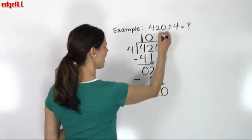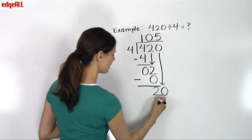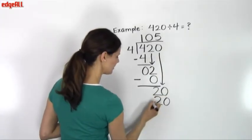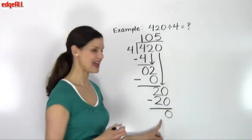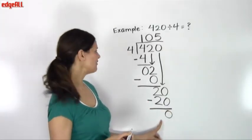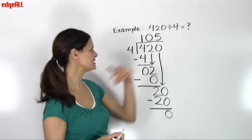If I multiply 5 times 4, I get 20 and put my answer here. Then 20 minus 20 equals 0. I have no remainder, and I'm finished working out the solution.